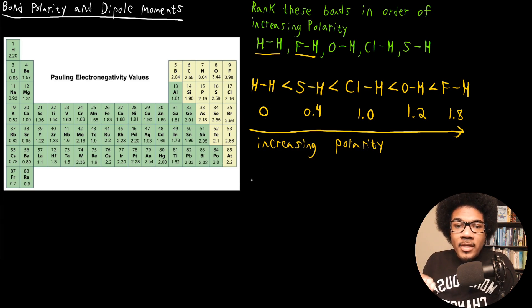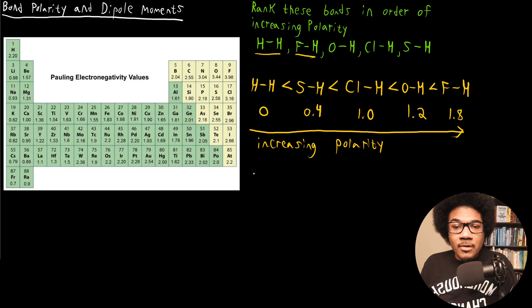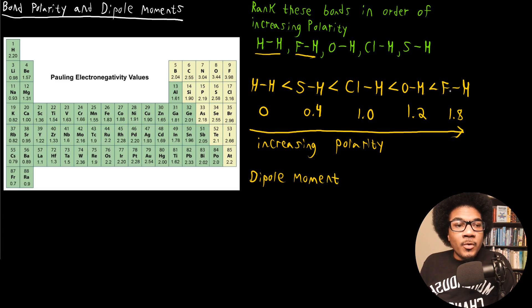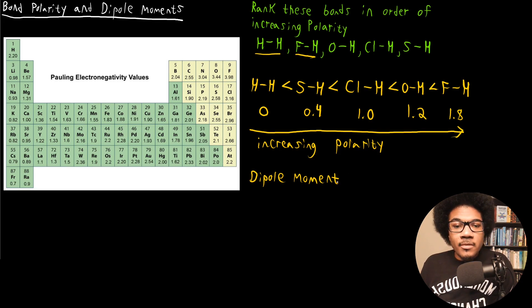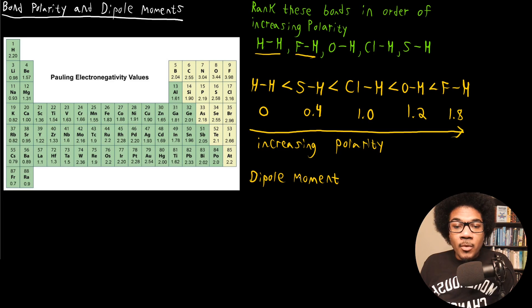The way that we denote or recognize this charge disparity in chemistry is with something called a dipole moment. Basically, since you create this charge disparity, you create what's known as a dipole — two opposite poles on the same object, or in this case, a bond. A dipole moment in chemistry is just an acknowledgment of that charge disparity in the bond.